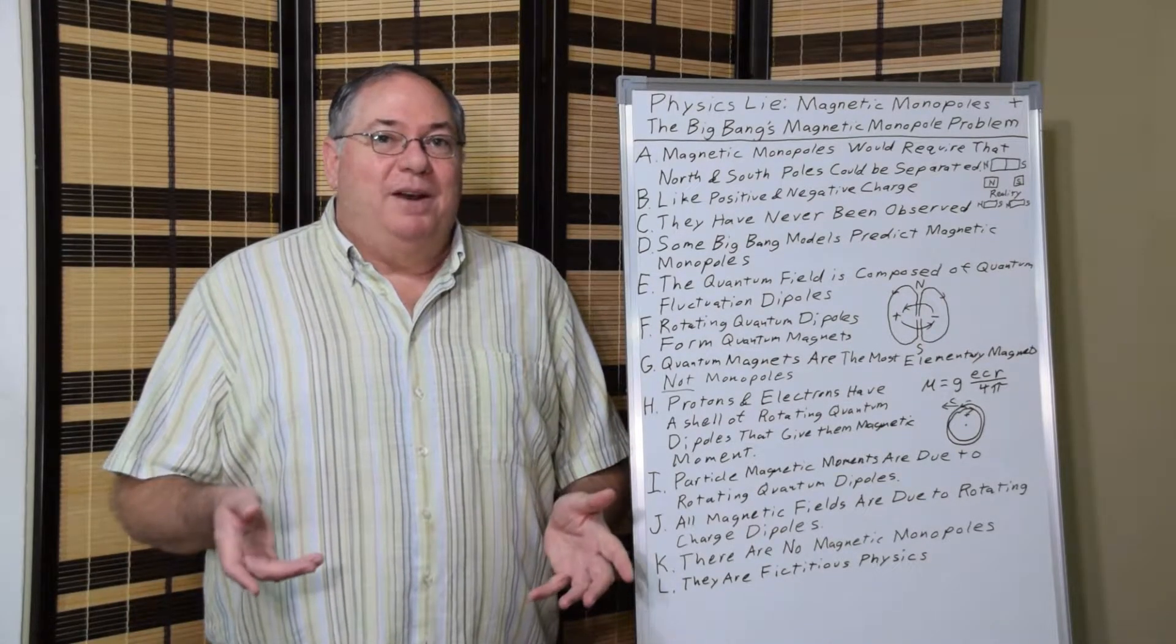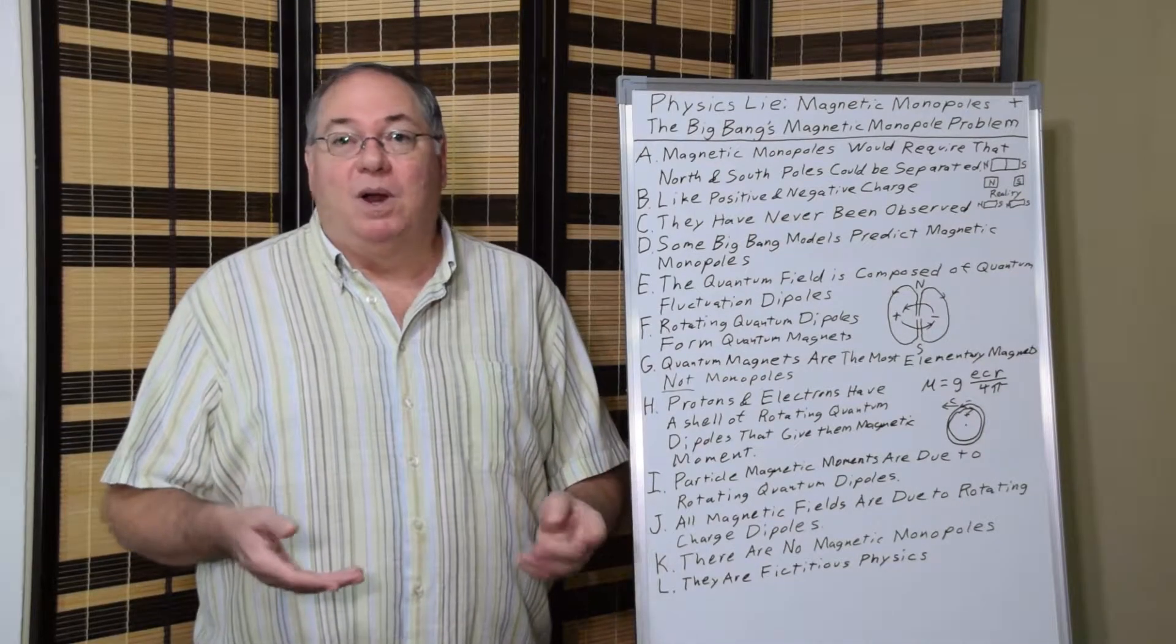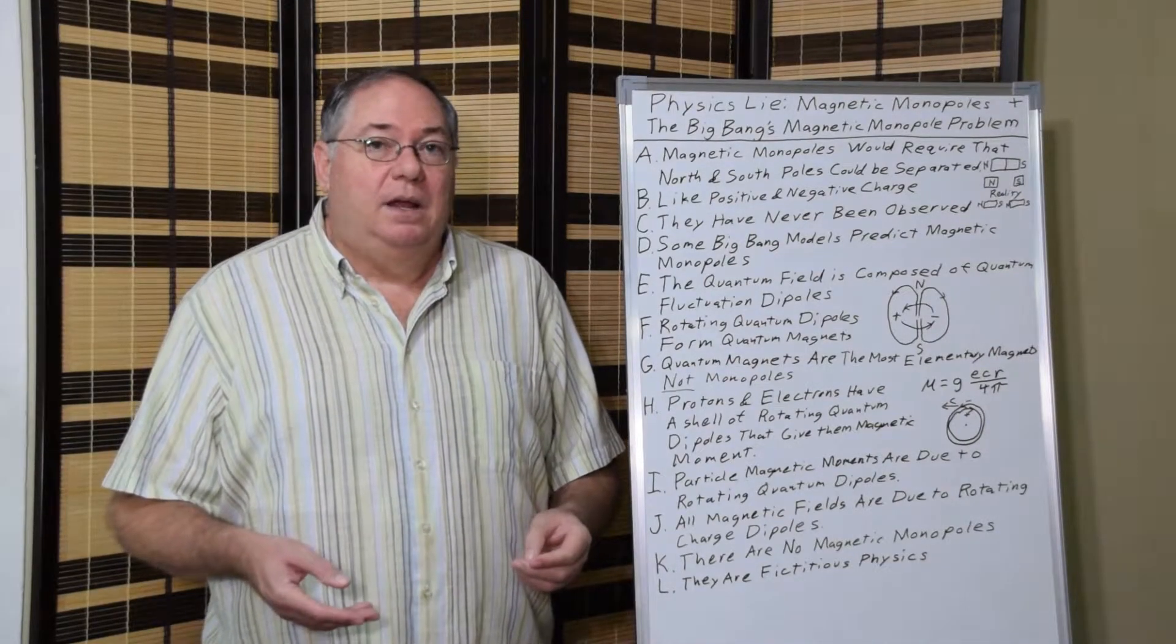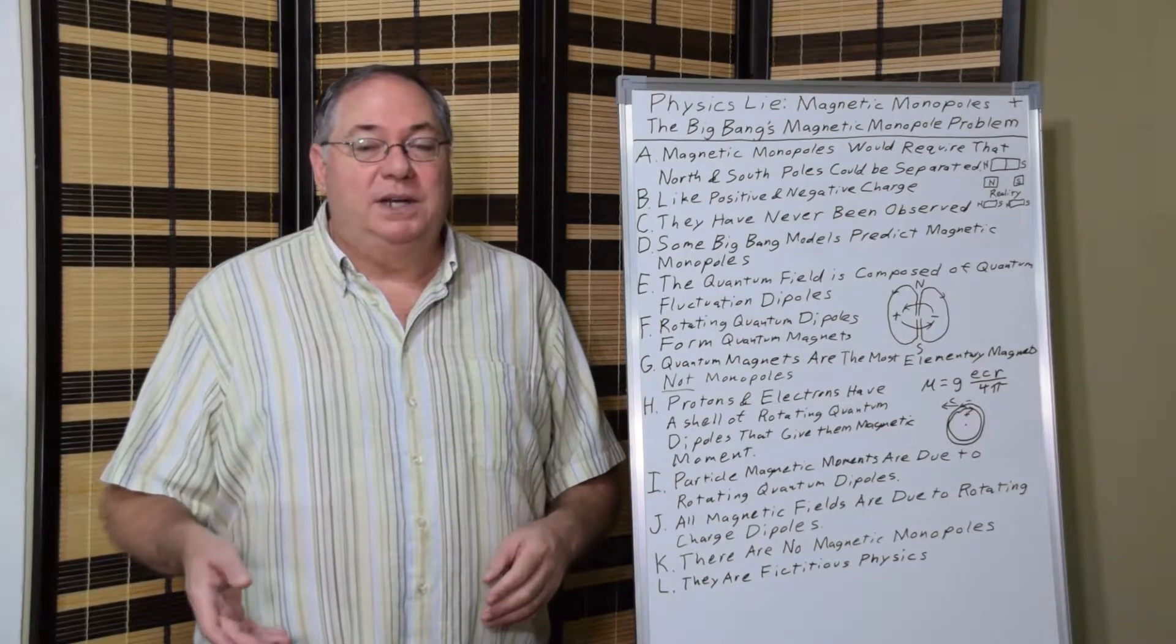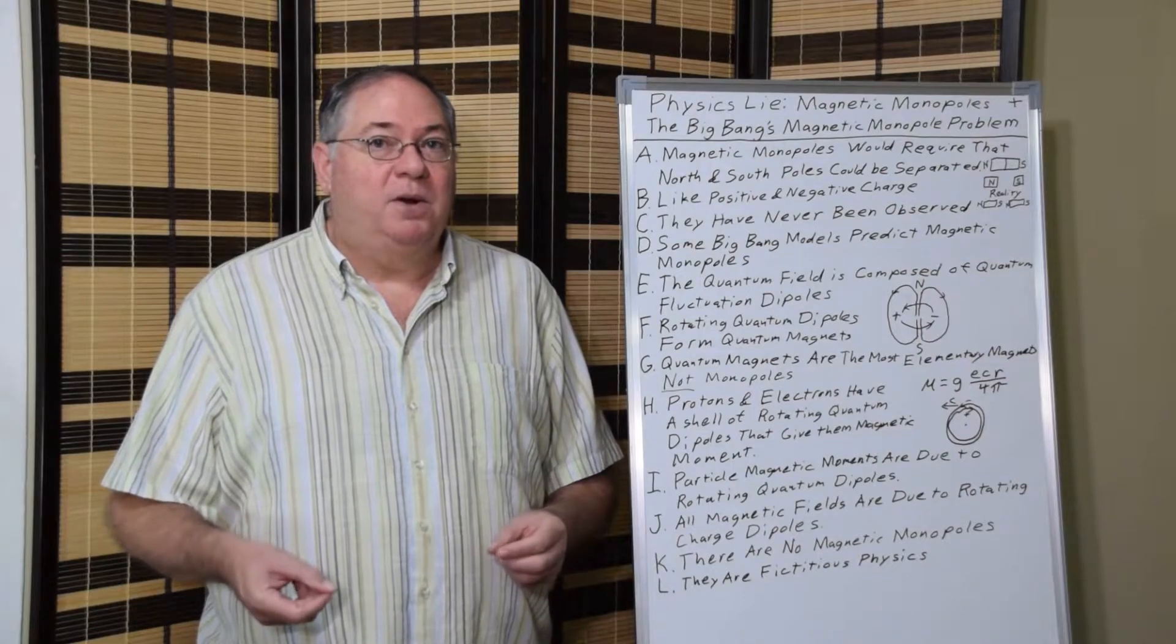To understand the problem better, we can go back to look at the makeup of the quantum field itself. The quantum field is composed of quantum fluctuation dipoles. These are normally modeled as particle pairs.